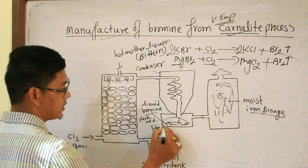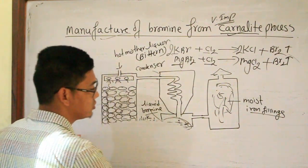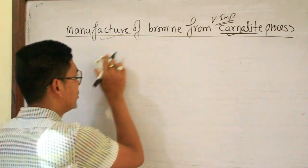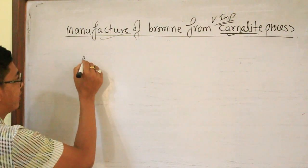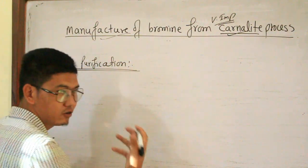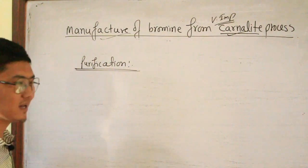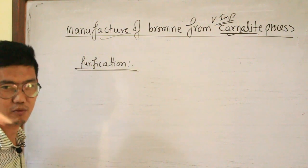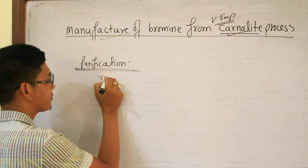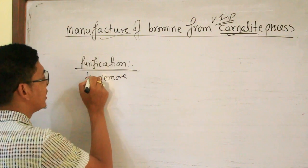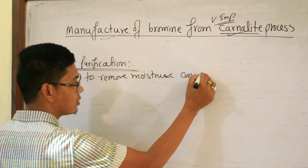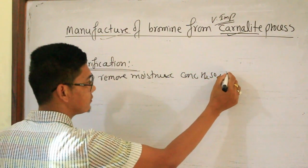The obtained liquid bromine is not necessarily 100% pure. For purification, the liquid bromine may contain moisture as an impurity and traces of iodine as impurities. These must be removed.